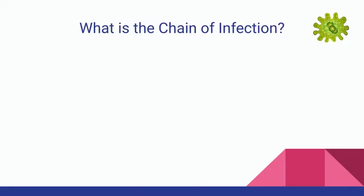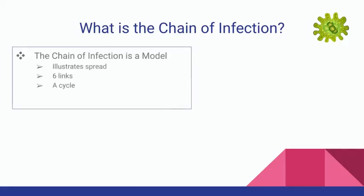So what is the chain of infection? Basically, the chain of infection is a model. Displaying it as an actual chain can help us better understand it. This chain tells us how a pathogen is able to spread from, for example, person to person.